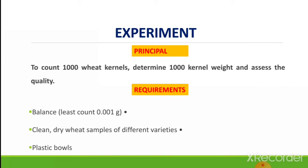The experiment starts with the principle: the main objective of this practical is to count 1000 wheat kernels to determine 1000 kernel weight and assess the quality. For conducting this experiment we will require a balance with a least count of 0.001 gram, clean dry wheat samples of different varieties, and plastic bowls.